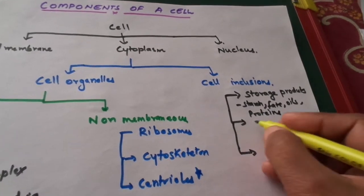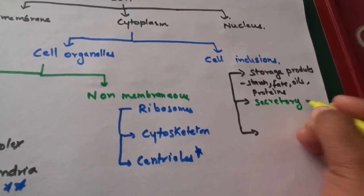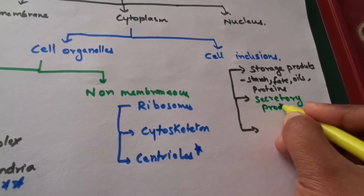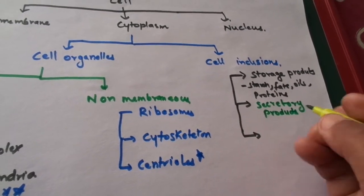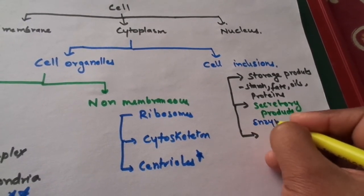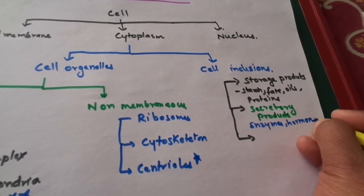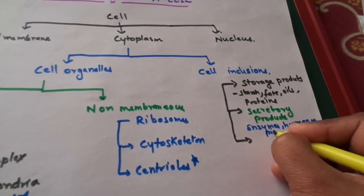The next is secretory products such as enzymes, hormones, pigments, etc.